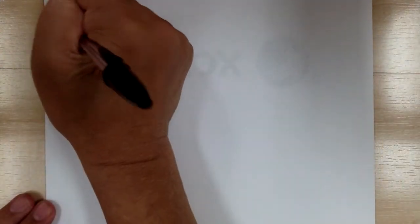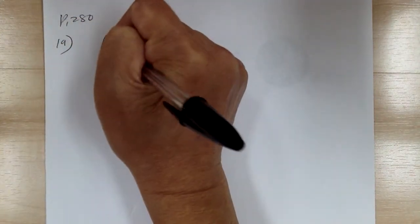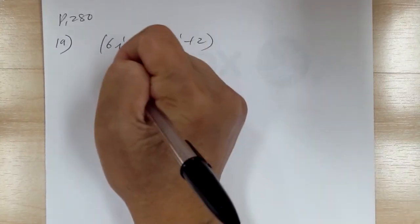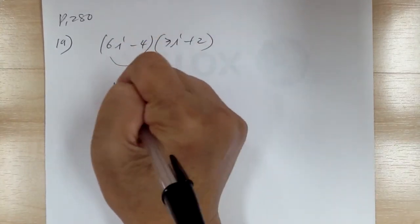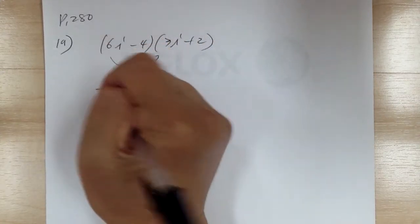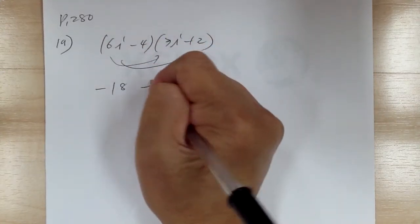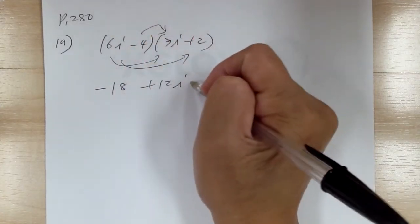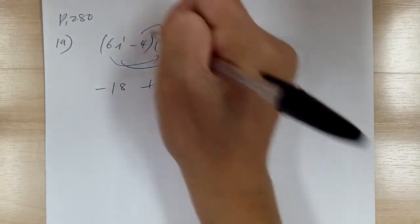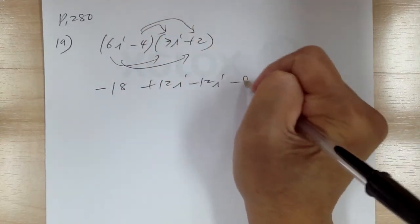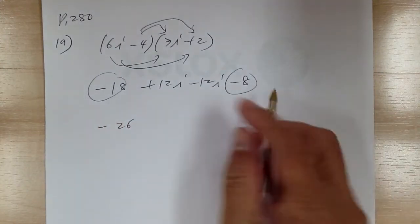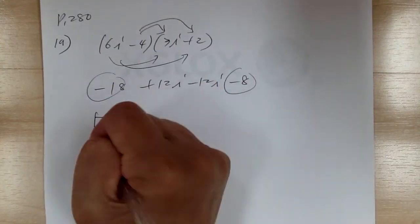Number 19: you got (6i minus 4)(3i plus 2). Distribute: 6 times 3 is 18, and i times i is negative, so minus 18. Multiply: plus 12i. Then the second term: this times i gives minus 12i, and this times 2 gives minus 8. Combine the like terms to get negative 26, and the imaginary parts cancel out.